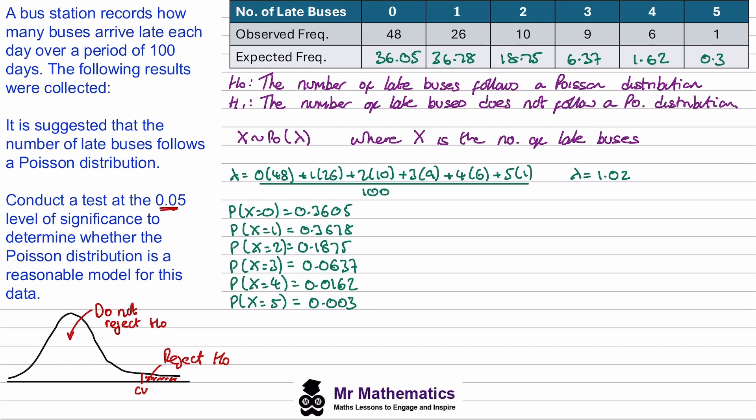Now whenever we run a chi-square test, we need the expected frequency to be at least 5. Which means in this case we need to combine the categories for 4 and 5, because neither of these have an expected frequency of 5 or higher. So if we bring them both into the 3 column, then we'll add the 6.37, the 1.62 and the 0.3, and we get a total expected frequency of 8.29. We also need to add the observed frequencies together as well. So this will give us a total of 16.